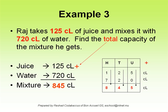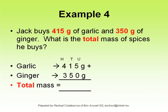Example 4: Jack buys 415 grams of garlic and 350 grams of ginger. What is the total mass of spices he buys?